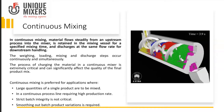The process of charging the material in a continuous mixer is extremely critical and can significantly affect the quality of the final mix. Where do we prefer continuous mixing? When large quantities of a single product are to be mixed, or in a continuous process line requiring high production rates, strict batch integrity is not critical, and smoothing out batch product variations is required. Most mixing applications are batch type, with only a few applications being continuous.